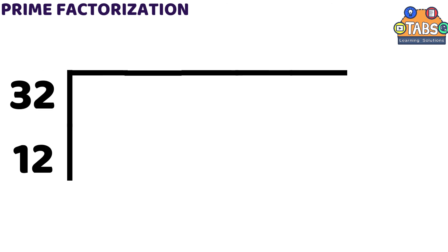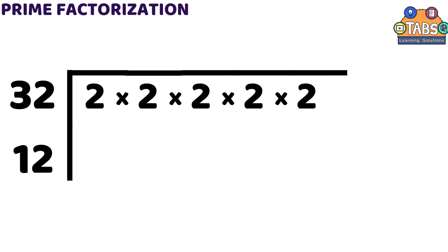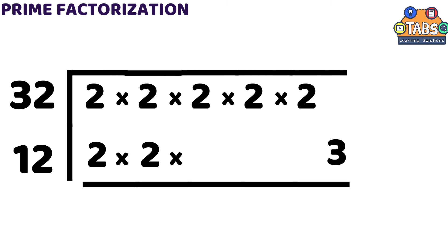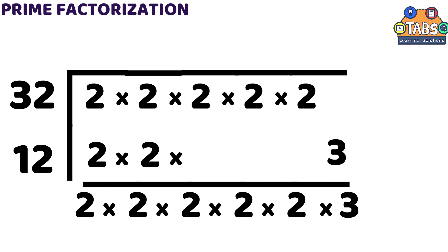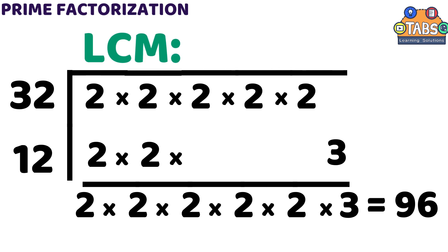Since we already know the prime factors of 32 and 12, let us make a simple table to match the same numbers in the same line and separate the different numbers in different lines. 32 has five 2s as prime factors, so we write those. Then 12 has two 2s and 3 as its prime factors, so we put the 2s in the same column while the number 3 goes in a separate column. After we arrange the numbers, we bring down all the numbers to get the equation: 2 times 2 times 2 times 2 times 2 times 3, which is 96. Therefore, the LCM of 12 and 32 is 96.